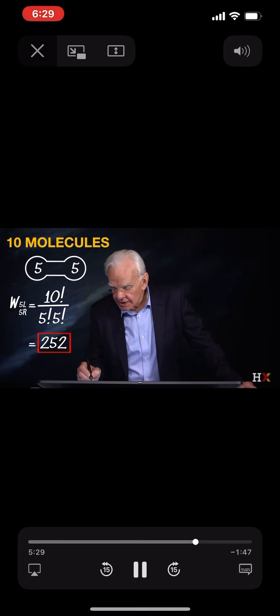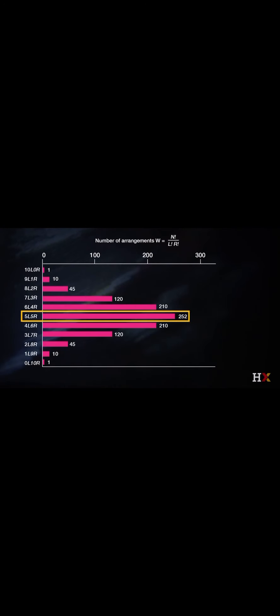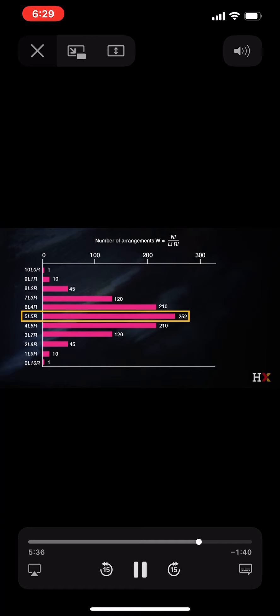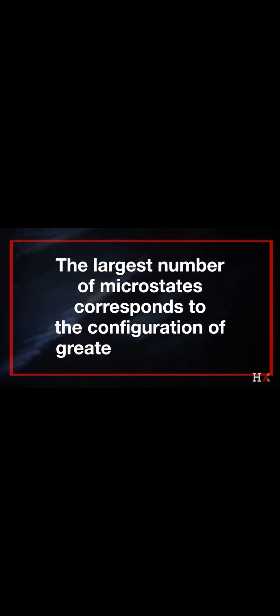So, we notice that 252 represents the case not only of an even distribution of molecules in the left-hand side and the right-hand side, but it has the greatest number of microstates. So, the greater the number of microstates, the higher the probability, and that is a fundamental conclusion that the largest number of microstates corresponds to the configuration of greatest probability.